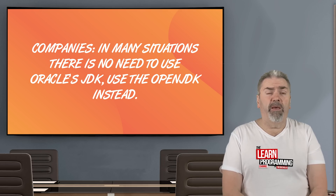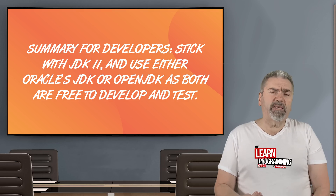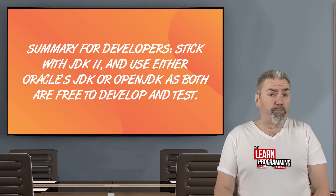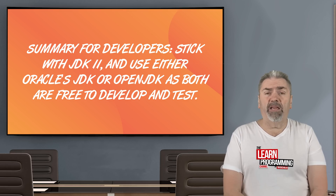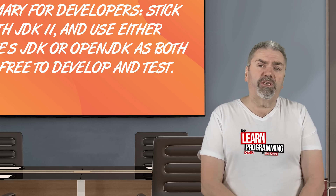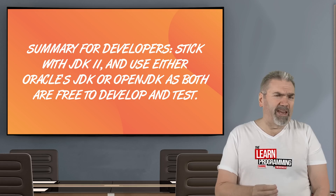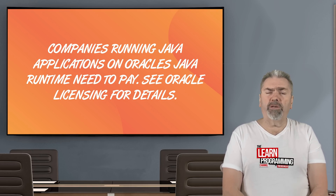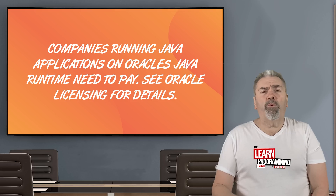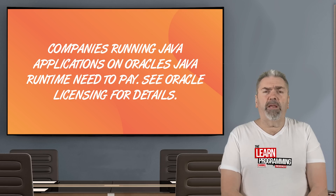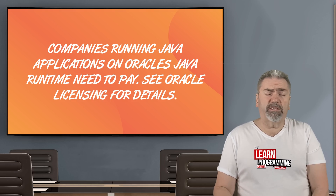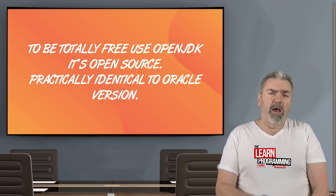If a company already has a support contract with Oracle and they're paying for Java anyway, there's no reason not to use the Oracle version. Companies will need to pay for the Oracle JDK, and currently Oracle's pricing model is basically per server, per CPU — around $25 a month per CPU for enterprise customers with lots of CPUs. But that licensing is all handled through Oracle. To be totally free, I would suggest sticking to the OpenJDK — it's open source and practically identical to the Oracle version anyway.